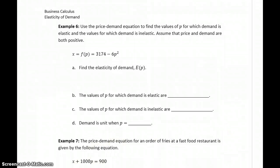In example 6, we're given a price-demand function. We want to answer some similar questions. Where is demand elastic, where is it inelastic, and where is demand unit? In this case, we already have our price-demand function solved for x. So we should be able to find the elasticity of demand function to be 12p squared over 3,174 minus 6p squared.